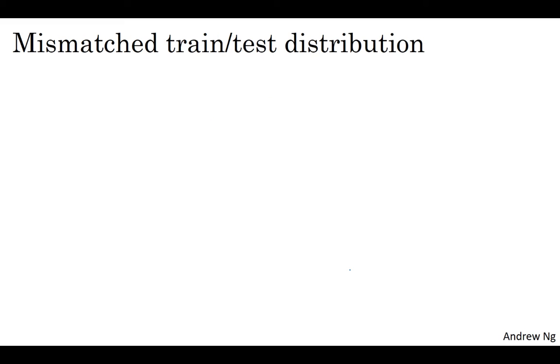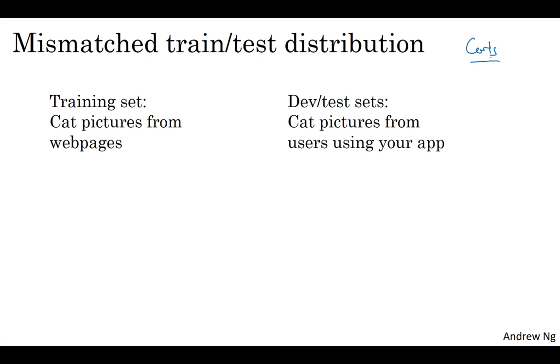One other trend we're seeing in the era of modern deep learning is that more and more people train on mismatched train and test distributions. Let's say you're building an app that lets users upload a lot of pictures, and your goal is to find pictures of cats in order to show your users, maybe all your users are cat lovers. Maybe your training set comes from cat pictures downloaded off the internet, but your dev and test sets might comprise cat pictures from users using your app. So maybe your training set has a lot of pictures crawled off the internet, but the dev and test sets are pictures uploaded by users. Turns out a lot of web pages have very high resolution, very professional, very nicely framed pictures of cats, but maybe your users are uploading blurrier lower res images just taken with a cell phone camera in a more casual condition. And so these two distributions of data may be different.